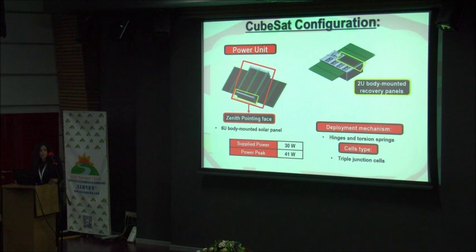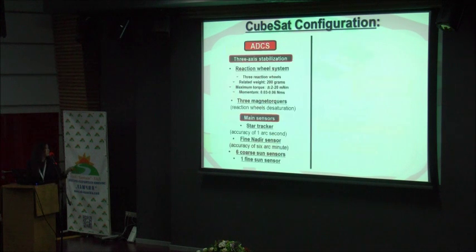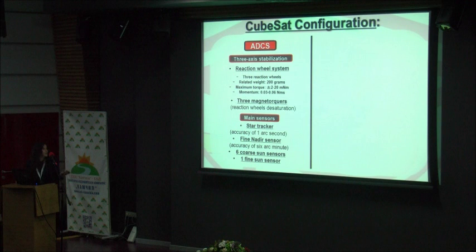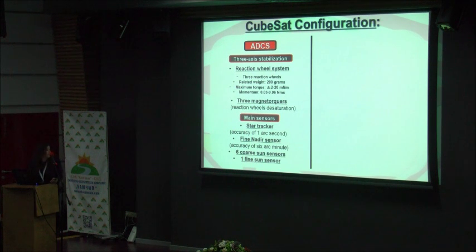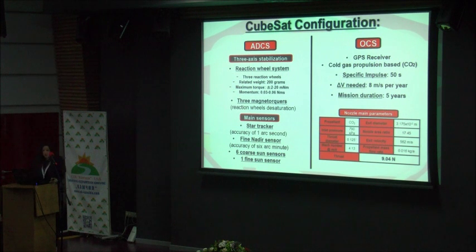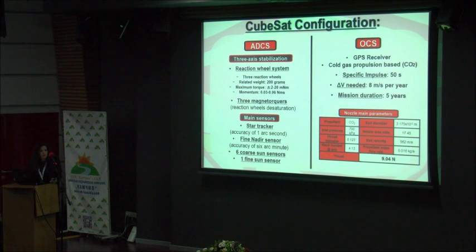For the deployment mechanism, we will use hinges and torsion springs, quite similar to what is used by PlanetLab CubeSats. For attitude determination and control, we need a very stable system — our CubeSat will be 3-axis stabilized using a reaction wheel system and 3 magnetorquers for momentum desaturation. We will carry a star tracker, a fine attitude sensor, coarse sun sensors, and one fine sun sensor. For orbit control, in addition to the GPS receiver, we will carry cold gas propulsion based on carbon dioxide, sufficient for four years to compensate the 25 kilometers estimated from orbital decay analysis.